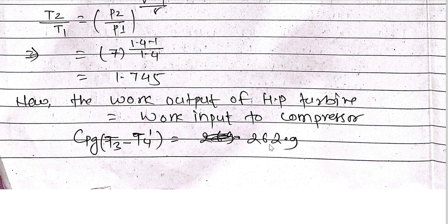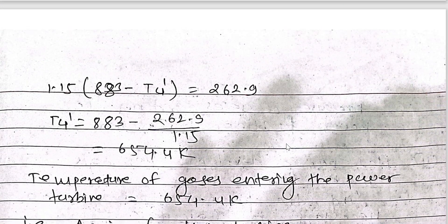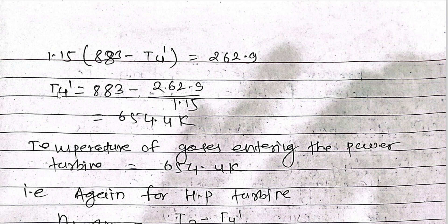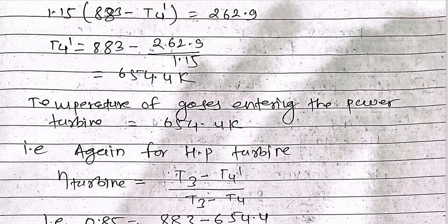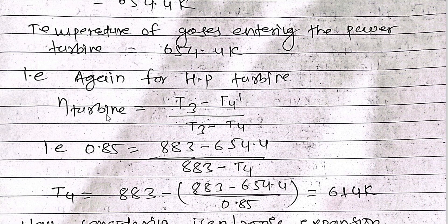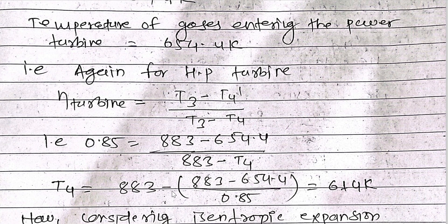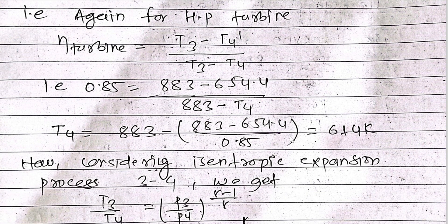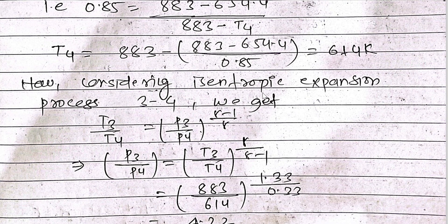Using Cp_g × (T3 - T4') = 262.9 kJ/kg, which equals the compressor work input, and substituting all values, we can find T4' — the actual temperature of gas entering the power turbine — which is 654.4 K. Then, applying HP turbine efficiency: eta = (T3 - T4') / (T3 - T4), we get T4 = 614 K.